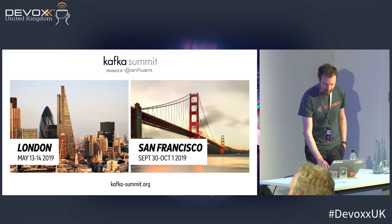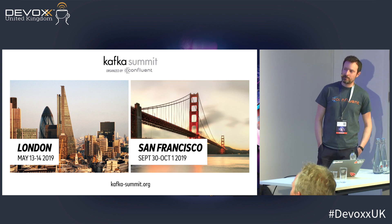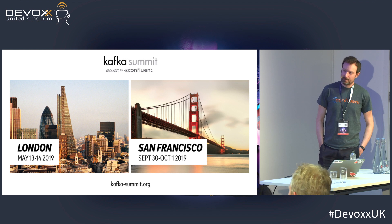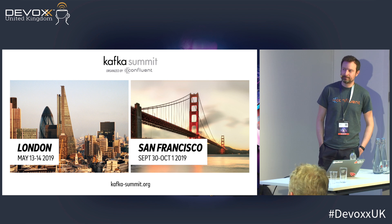A quick plug at the end for Kafka Summit, which is on Monday and Tuesday next week. There are some tickets available — come and see us at the Confluent Stand if you'd like to attend. And if you're lucky enough to be in San Francisco at the end of September, then pop along there as well. Any questions in the last 30 seconds?